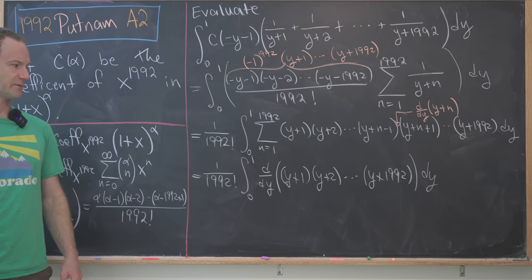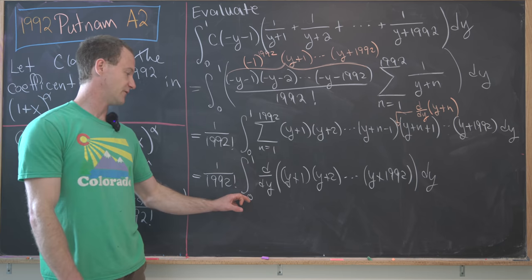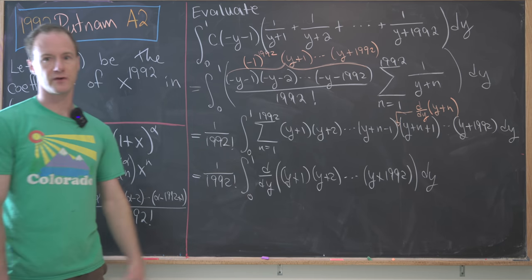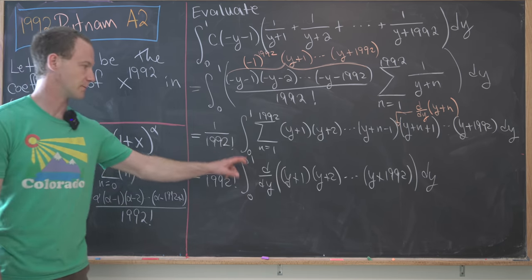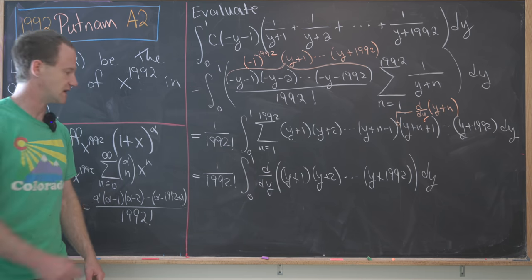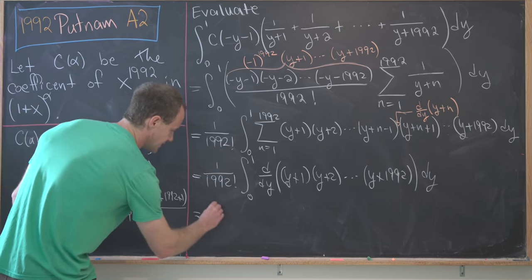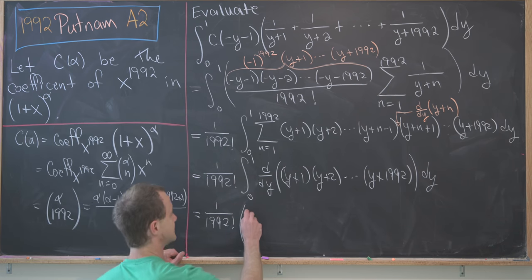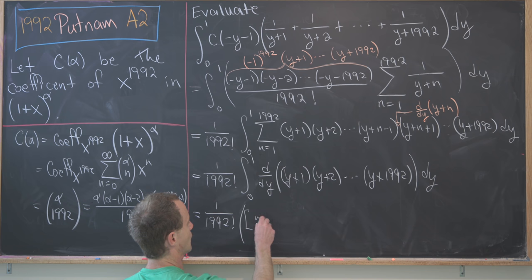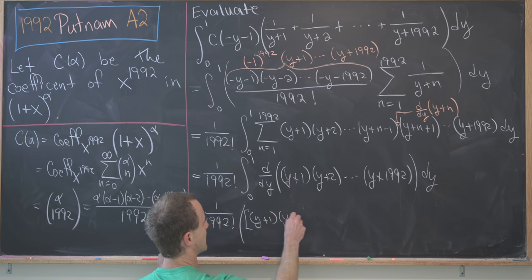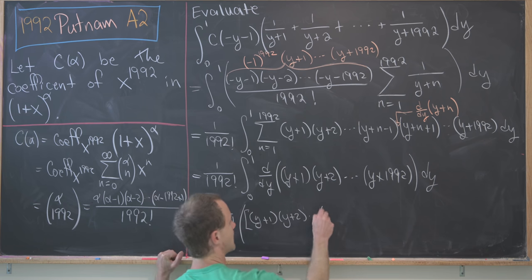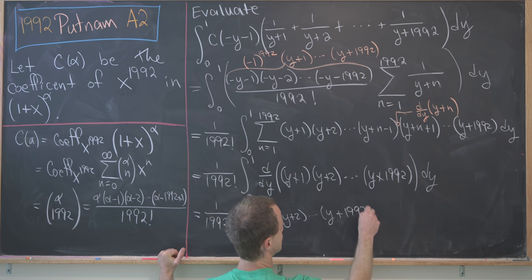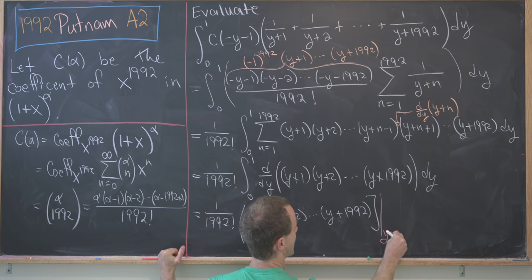But now we can apply the fundamental theorem of calculus part 1, which says if we take the integral of a derivative, those cancel and we're left with what's happening on the endpoints. This equals 1/(1992!) times the function (y+1)(y+2)...(y+1992), where we need to evaluate from y=0 up to y=1.